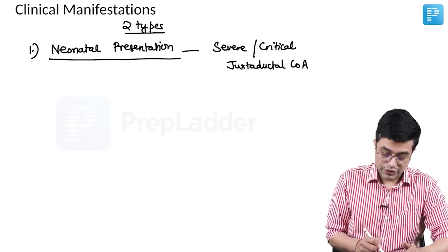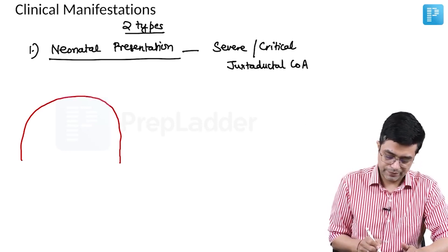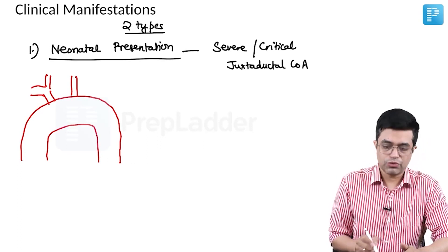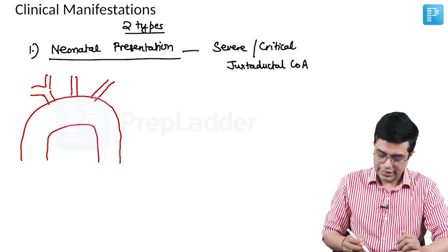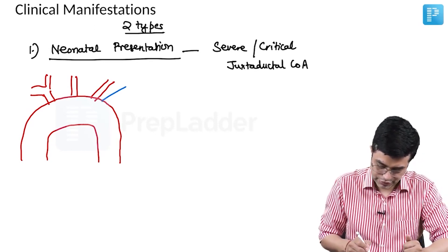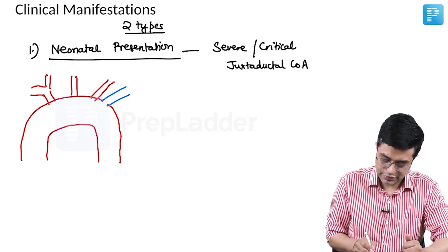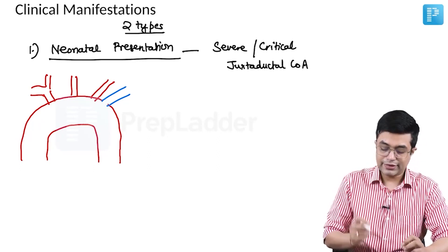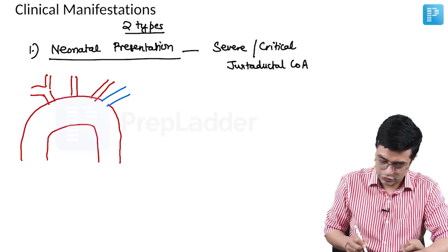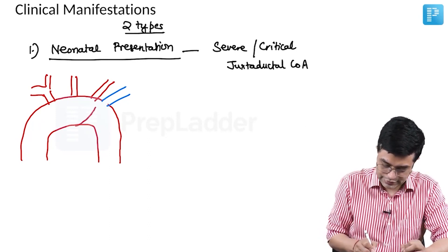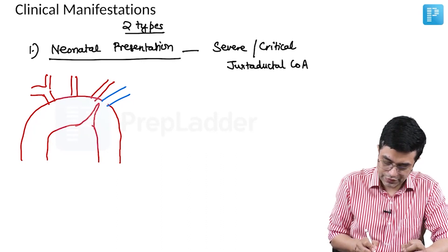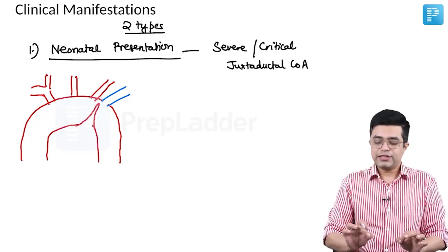Diagrammatically, this is the arch of aorta, the brachiocephalic trunk, the left common carotid, and the left subclavian artery. The ductus arteriosus attaches at a specific site just after the left subclavian. In severe critical narrowing, the narrowing occurs in a location near that site. Most neonatal severe forms have a narrowing very similar to this.